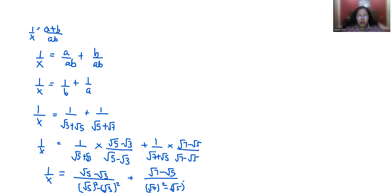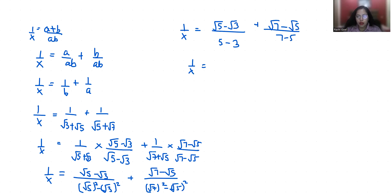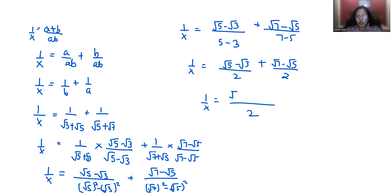So 1/X equals (√5 − √3)/(5 − 3) + (√7 − √5)/(7 − 5), which gives (√5 − √3)/2 + (√7 − √5)/2. We can cancel out the +√5 and −√5 terms, leaving 1/X = (√7 − √3)/2.